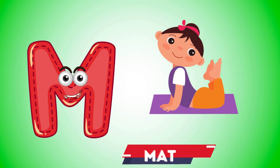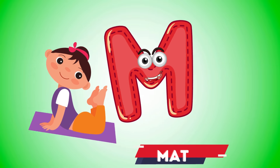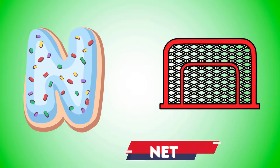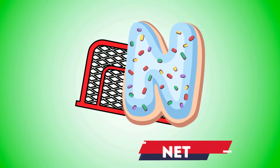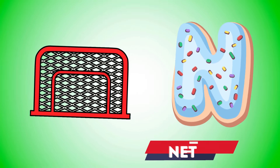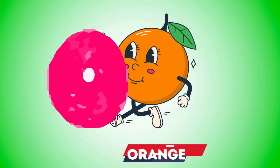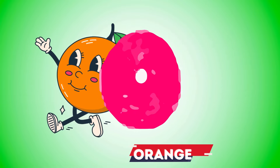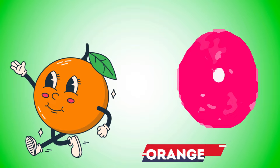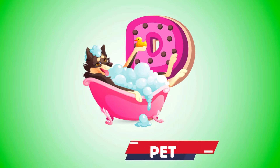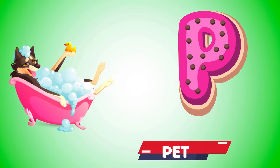M is for mat, m-m-mat. N is for net, n-n-net. O is for orange, o-o-orange. P is for pet, p-p-pet.